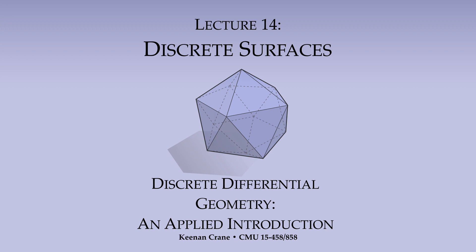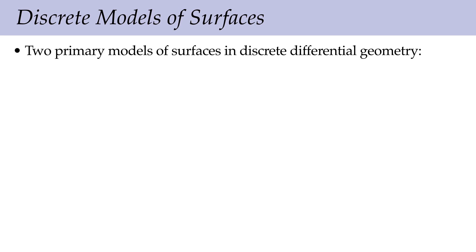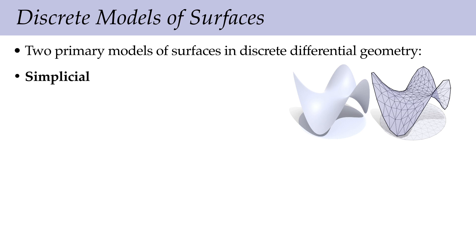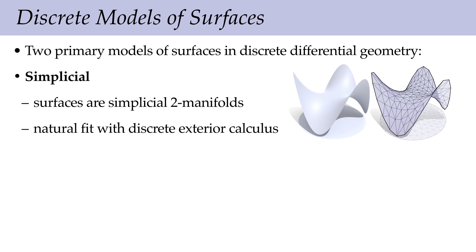We continue our discussion of surfaces by moving to the discrete setting. There are different models for surfaces in the discrete world, and two primary models are used in discrete differential geometry. One is simplicial surfaces — triangle meshes, or more precisely simplicial two-manifolds — which are a natural fit with discrete exterior calculus and allow us to do computation in the way we've been discussing.